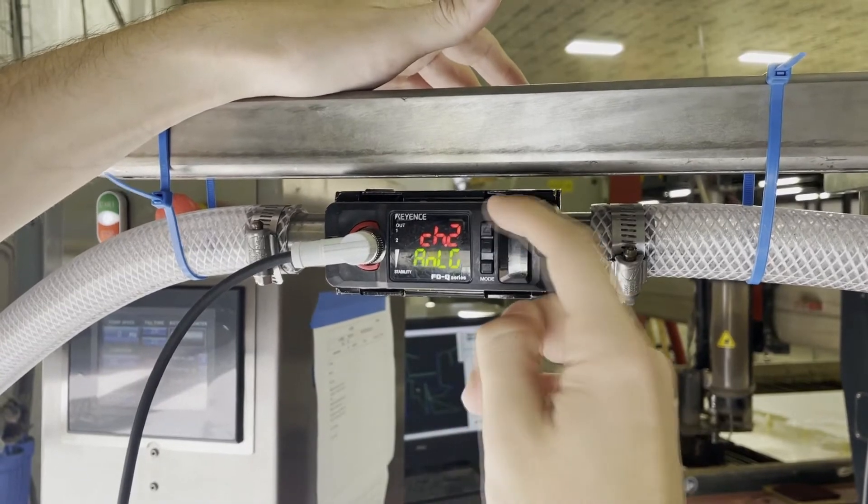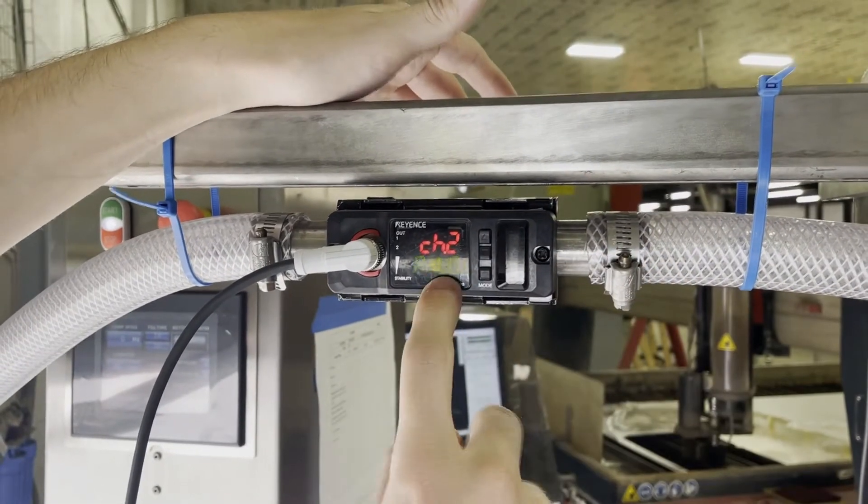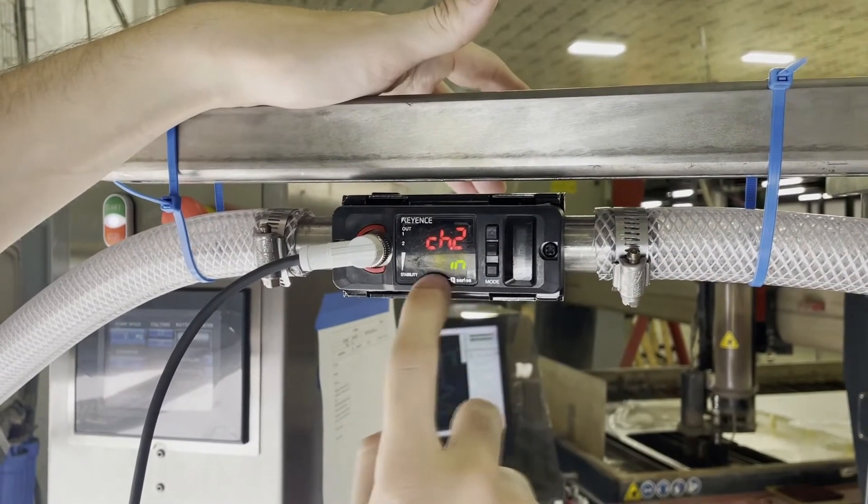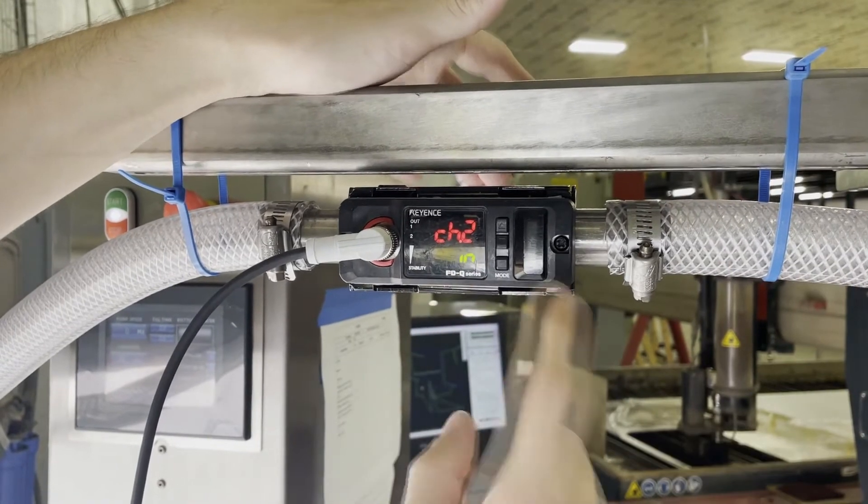Channel two, we're going to use this as an input. We can use it as an analog as well. In this case, we're going to use it as an input to reset our flow meter.